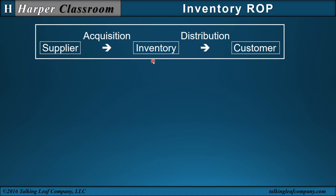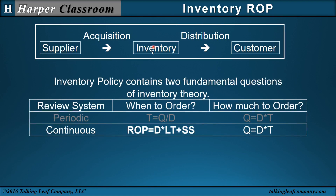The input-output model is that we will increase inventory as we acquire items from the supplier, and decrease inventory as we distribute items to the customer. The inventory policy contains the two fundamental questions of inventory theory: when to order and how much to order from the supplier. Notice the 'when to order' is where the ROP is contained.